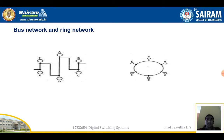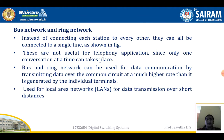Bus network and ring network: the first diagram shows the bus network and the second diagram shows the ring network. Instead of connecting each station to every other, they can all be connected to a single line. These are not useful for telephone applications since only one conversation at a time can take place. Bus and ring networks can be used for data communication by transmitting data over the common circuit at a much higher rate than it is generated by individual terminals.